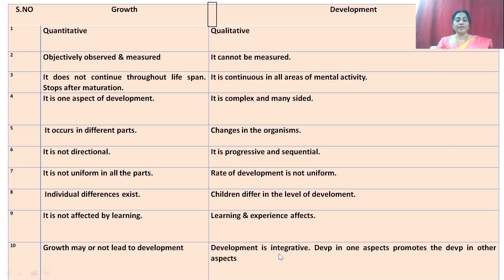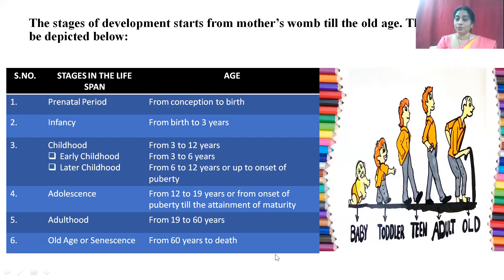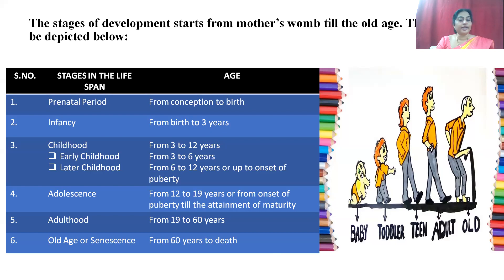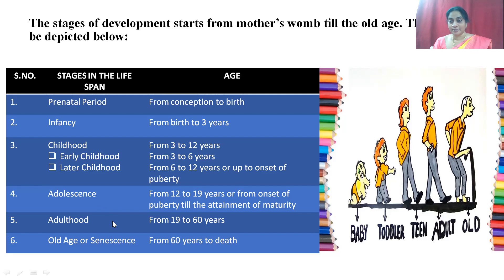The adolescent stage starts from 12 to 19 years, from the onset of puberty till attainment of maturity. Adulthood starts from 19 to 60 years, and old age or senescence is from 60 years till death. These are the different stages in the lifespan. Coming to prenatal development, the fetus spends around nine months in the womb. The prenatal period begins right from conception and ends at birth, which is approximately 272 to 280 days, or nine calendar months. This period is divided into three trimesters: the first trimester from zero to 13 weeks, the second from 14 to 26 weeks, and the third from 27 to 40 weeks.